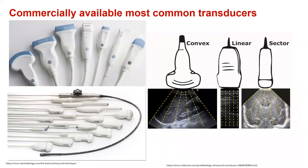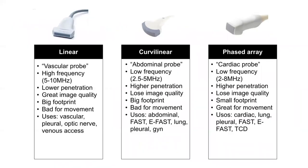There are many commercially available transducers now, but three main forms are primarily used: the convex, the linear, and the sector probe. The linear probe is the vascular probe using high frequencies, having lower penetration but great image quality and a relatively large footprint. The curvilinear or abdominal probe uses low frequencies, higher penetration, and also has a relatively large footprint.